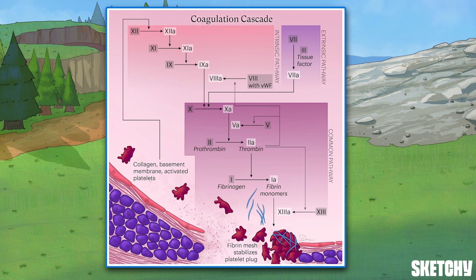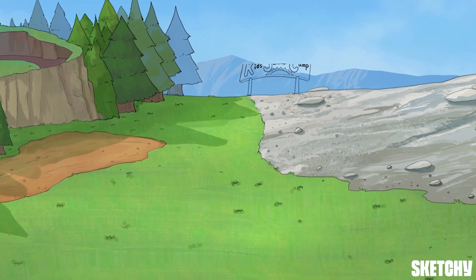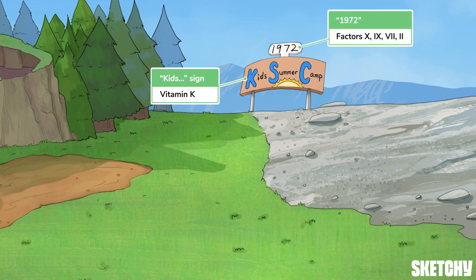Most of these factors are initially produced by the liver. Four of them are considered vitamin K-dependent factors because vitamin K is necessary for their production by the liver. This includes factors 10, 9, 7, and 2, aka prothrombin.